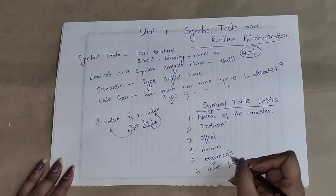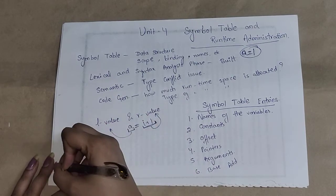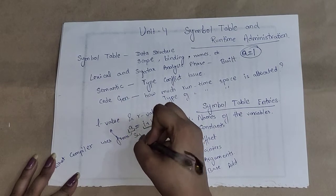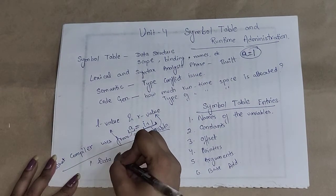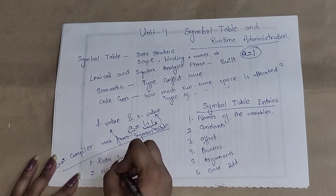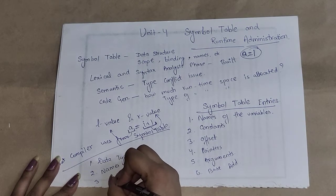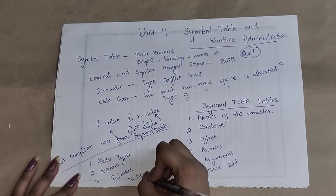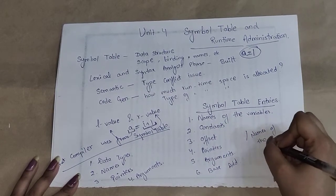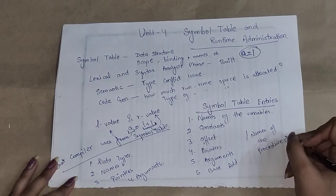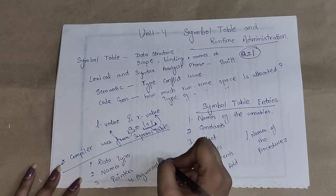So the entries include offsets, pointers, arguments, and base address. From these entries, the compiler extracts the type of the data, their names, pointers, and arguments from the symbol table. Symbol table also stores the names of procedures — all names, whether it is a procedure, a constant, or a data object, all names are stored here. And the compiler extracts data types, names, pointers, and arguments from this symbol table.